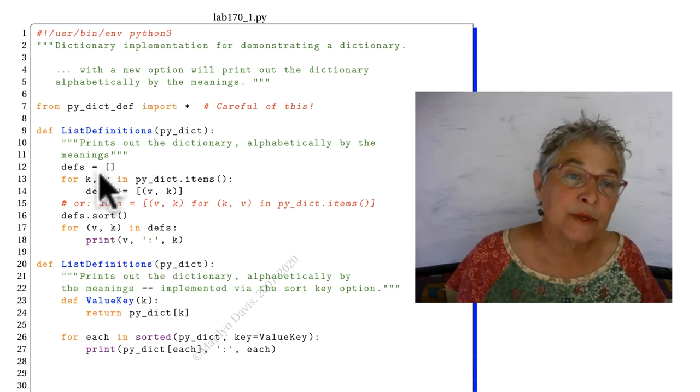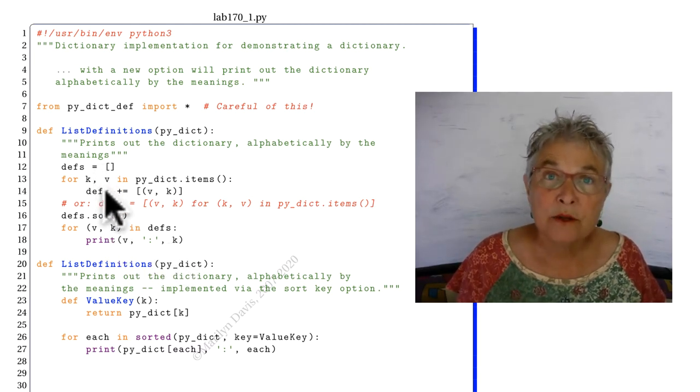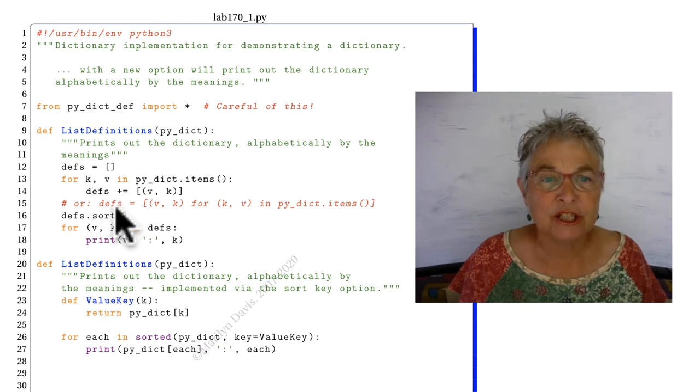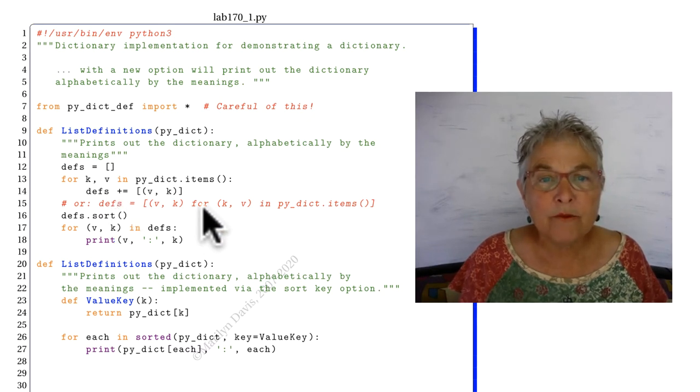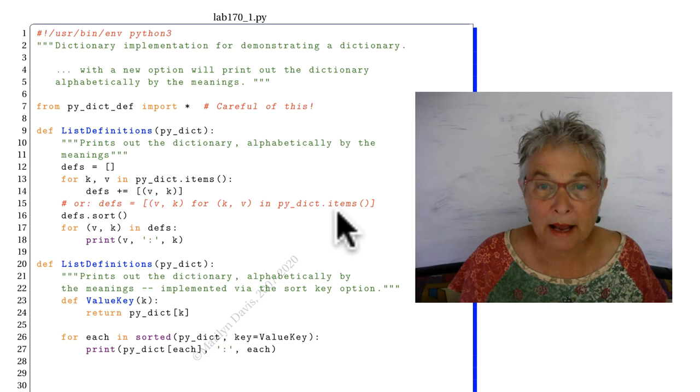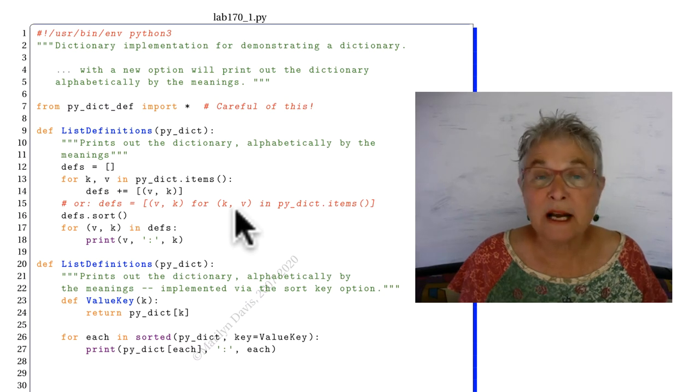I could have replaced these three lines, you realize, with this list comprehension. Here I'm for looping through my items, which gives me a tuple each time of key value.